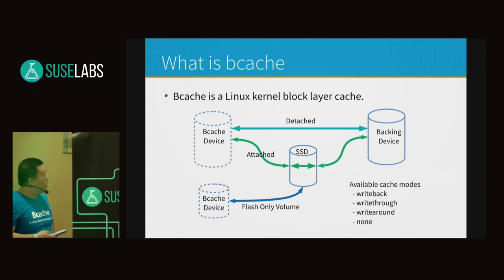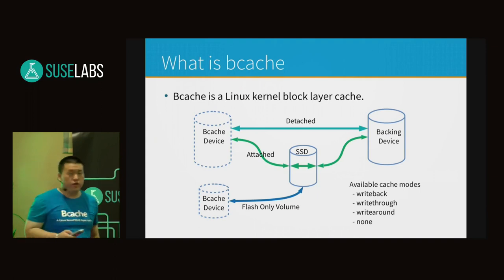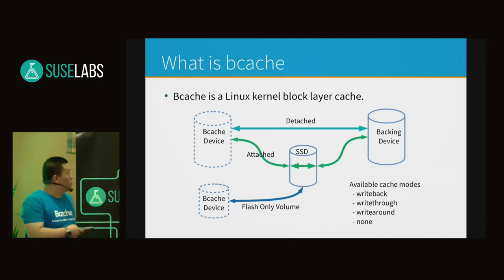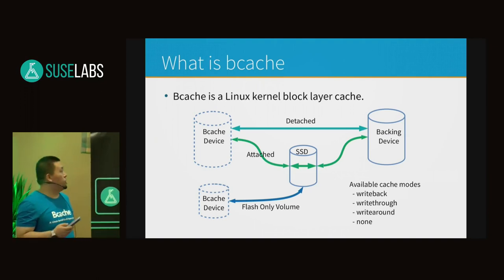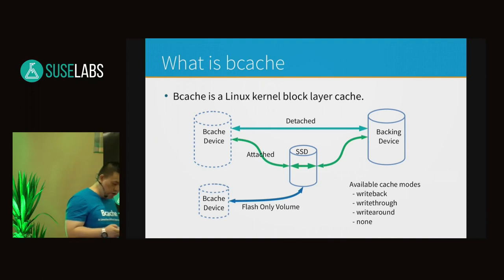Currently for bcache, we have four cache modes: write-back, write-through, write-around, and none.